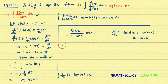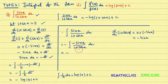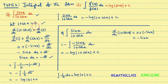We can rewrite this as −∫ (−sin x)/(1 + cos x) dx. Now observe: this is of the form ∫ f'(x)/f(x) dx, where the numerator is the derivative of the denominator. The answer is directly − log|f(x)| + c, where f(x) = 1 + cos x. So the answer is −log|1 + cos x| + c.